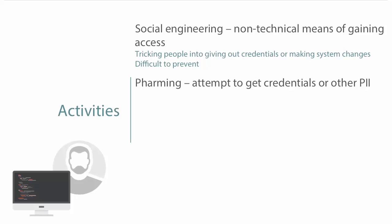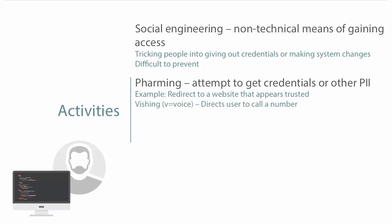Another human-based activity is pharming — an attempt to get credentials or other personally identifiable information by redirecting you to a website you think is trusted. A similar attack is vishing, which is the voice component. You might receive an email from a seemingly trusted source with a phone number to call, and when you call it could be a voice recording or an actual person performing a social engineering attack to gain personal information.